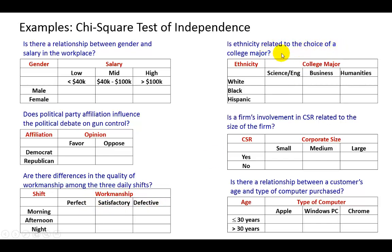Is ethnicity related to the choice of a college major? Look at this. So, you might identify three important categories of college majors, science, engineering, business, and then humanities, and then to see if there is a relationship between the field of study chosen and the ethnicity of the students.